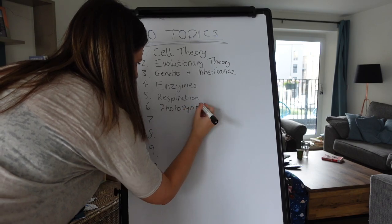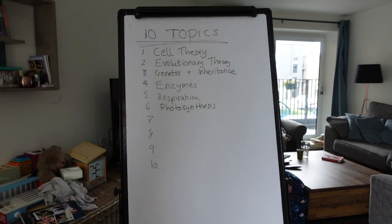Number six is just for biology: photosynthesis. If you're doing medicine, dentistry, or zoology this won't come up, but if you're taking a biology degree then photosynthesis — as a fundamental chemical reaction in plants — will definitely be covered, so make sure you check over that.